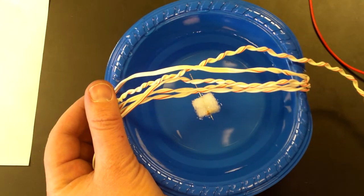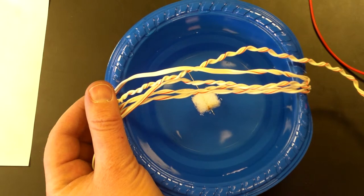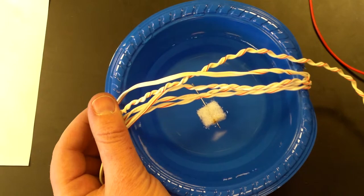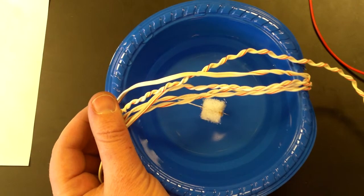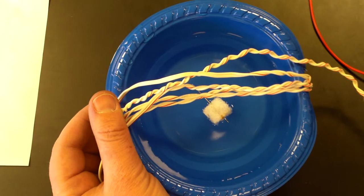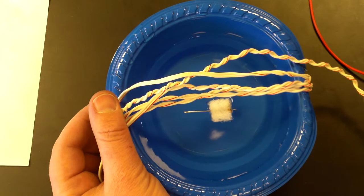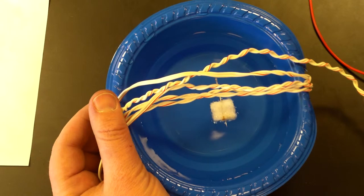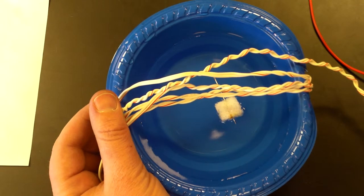The needle ends up going perpendicular. So turn it off, it goes parallel, and then it flips. Do that again. Parallel when it's off, turn it on and it flips.